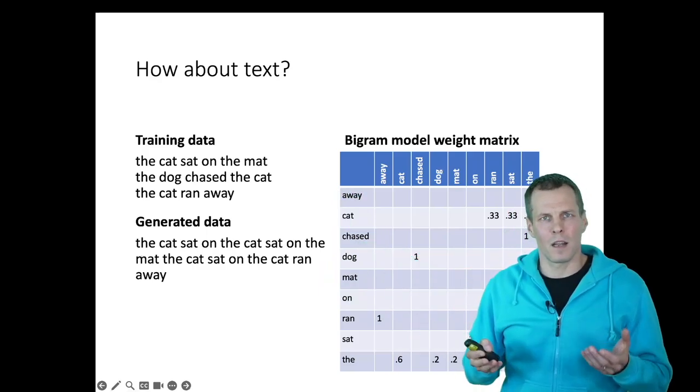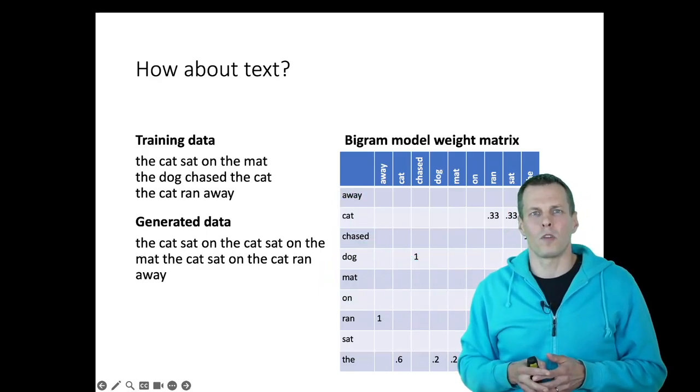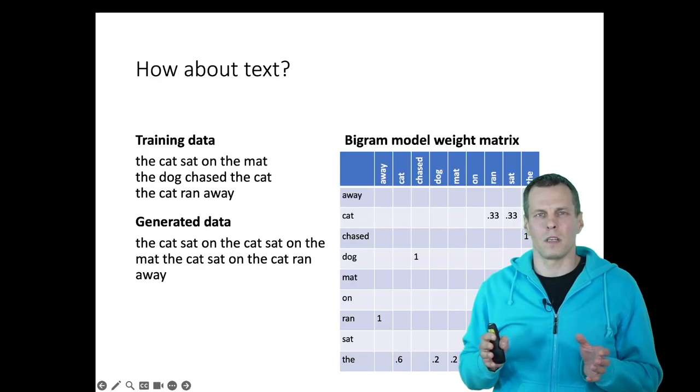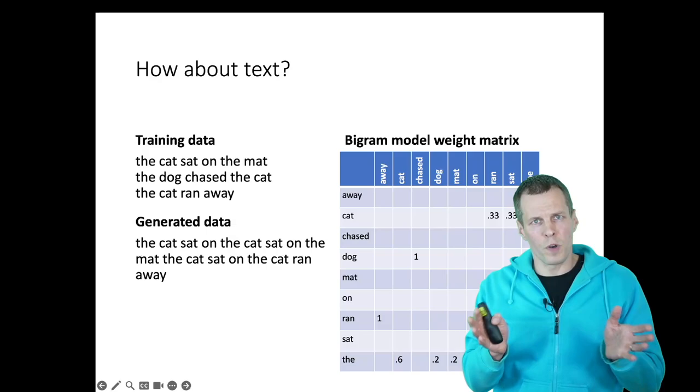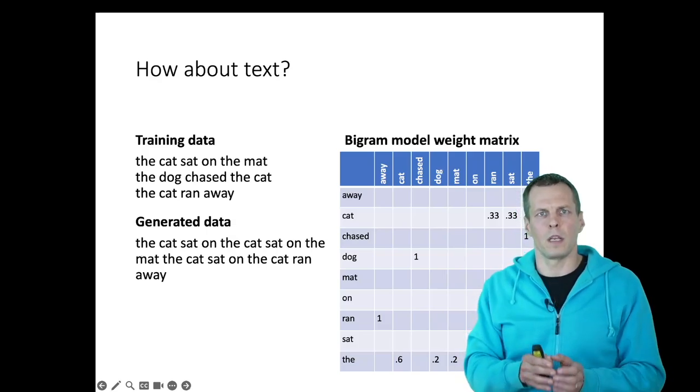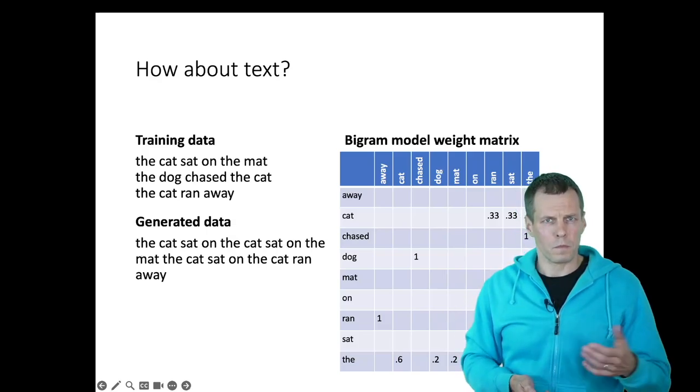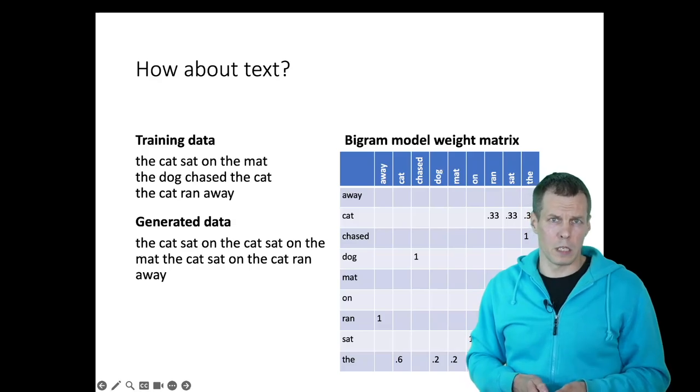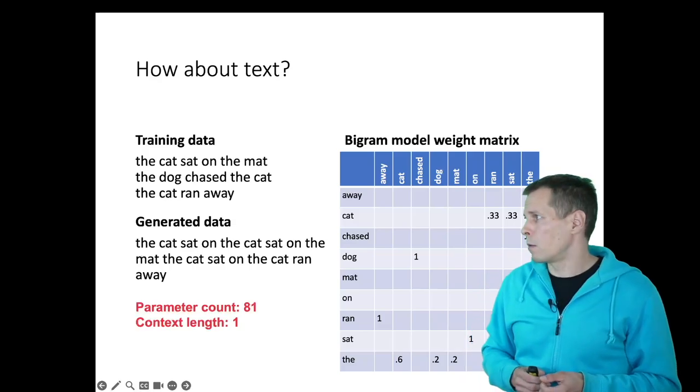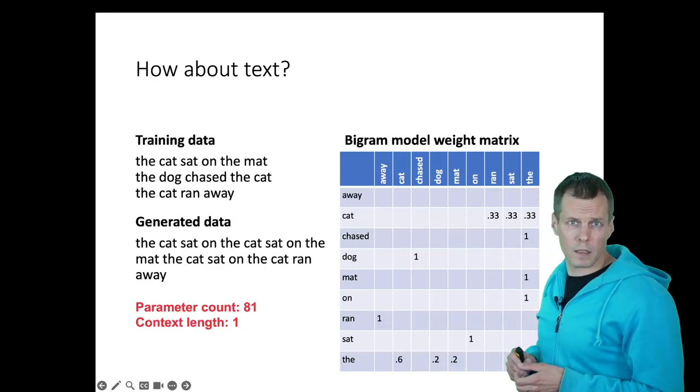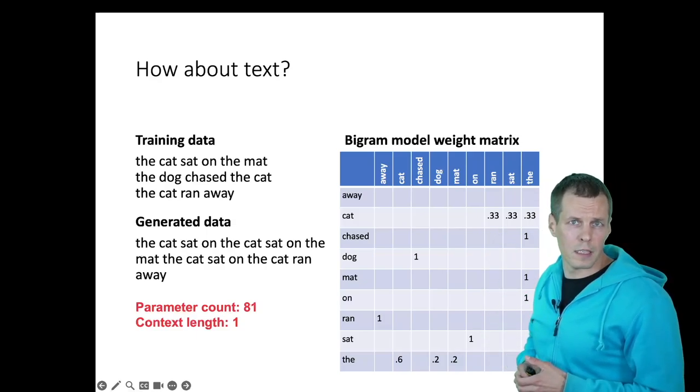We can make this a lot better if we start to look at broader context. So instead of looking at just the previous word, we could take a look at the two previous words, or three previous words. We can increase the context length. This small language model has context length of one word, and then we have 81 parameters because we have 81 probabilities.